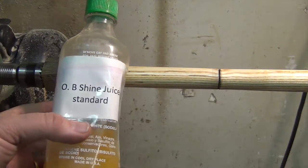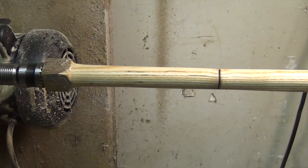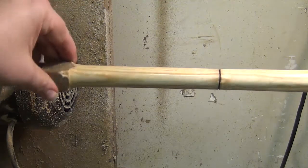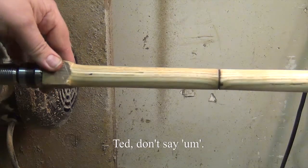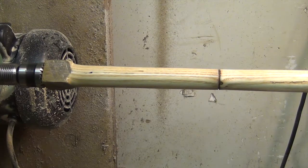This is the standard recipe of the OB shine juice. It still looks kind of shiny. I don't know if it shows up on the camera very well, but it looks like it's a little bit more yellow still than the other two variations.